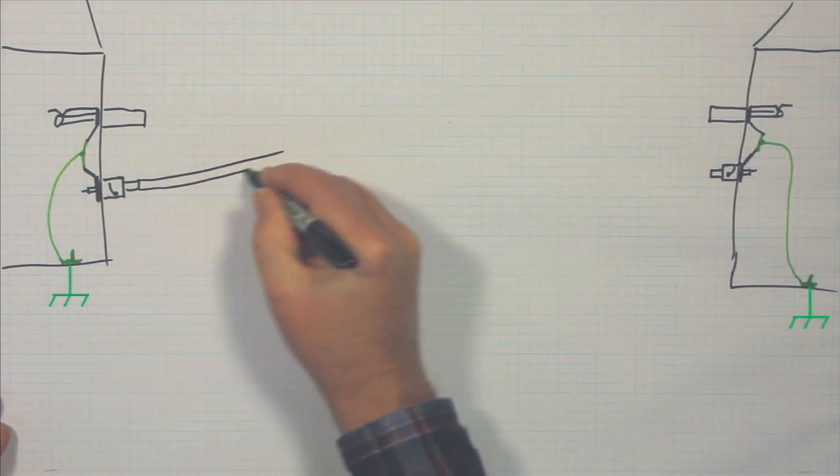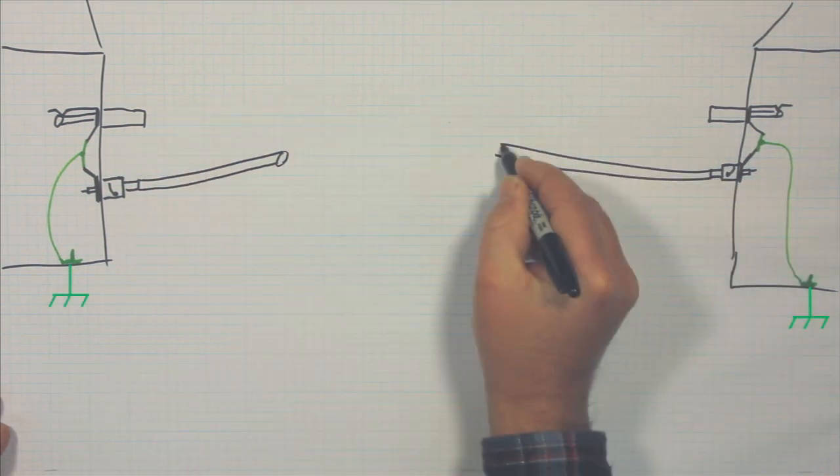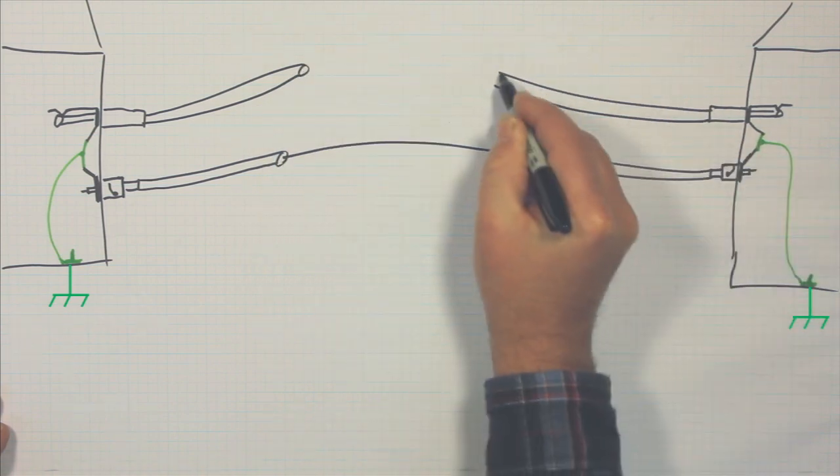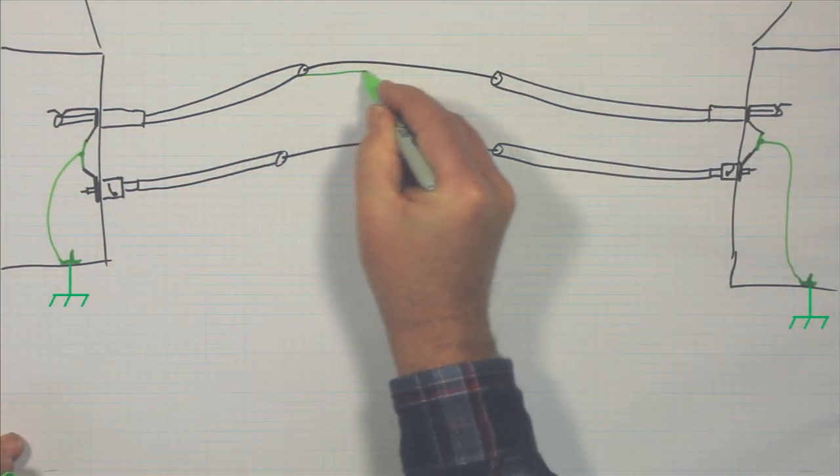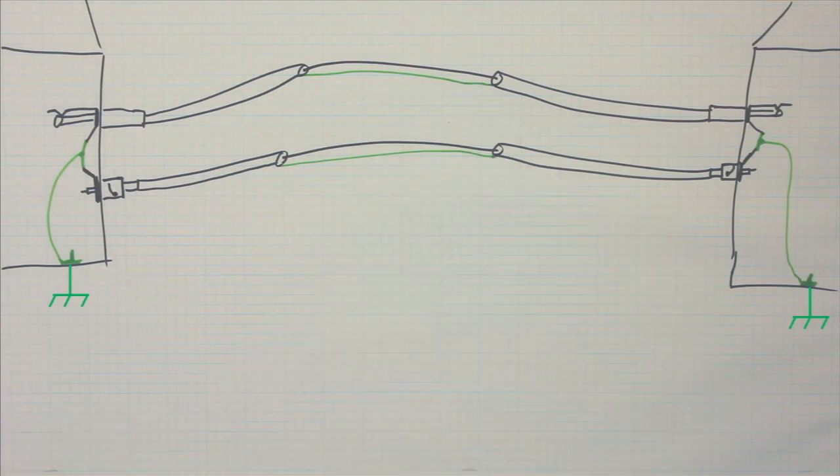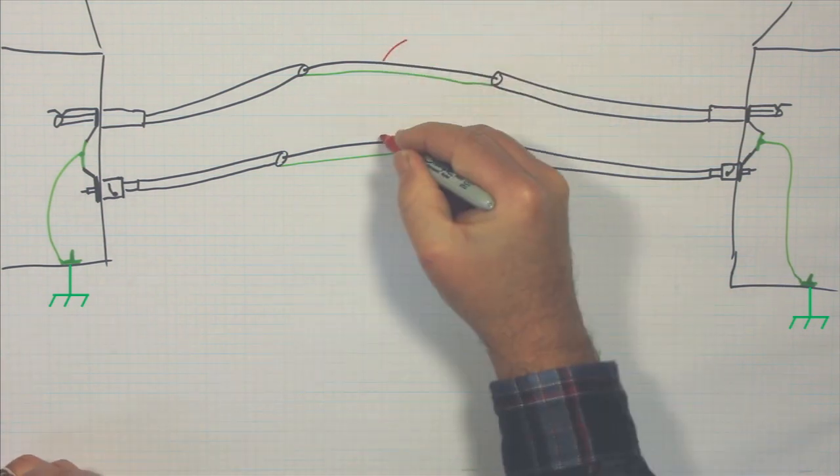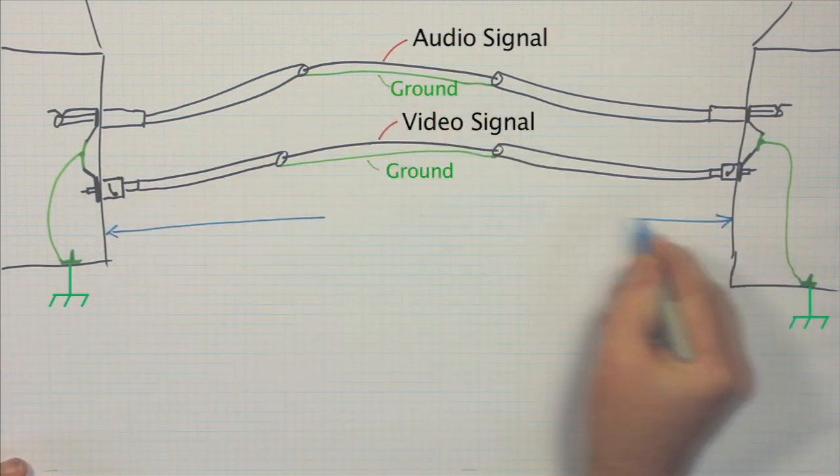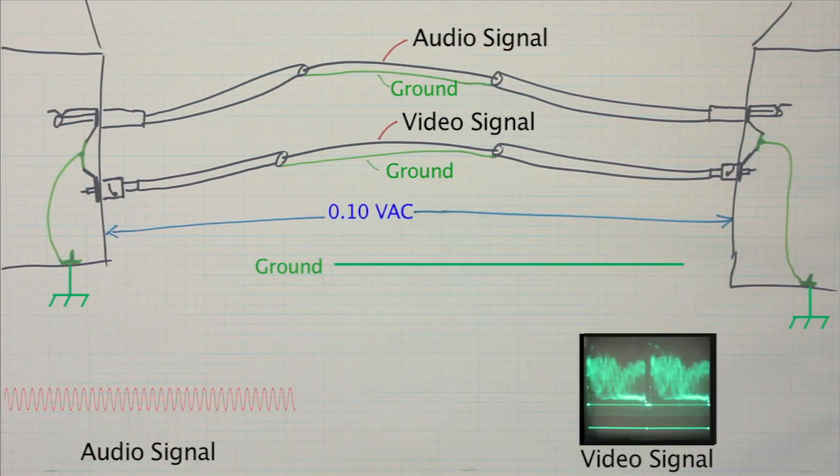The 60 cycle electrical power we use induces a slightly higher potential at one ground. And when it's connected to a lower potential ground through the shield or ground of an audio or video cable, a 60 cycle voltage is induced and current flows through that audio or video shield. This current flow causes the reference conductor, the signal ground, to fluctuate in potential or voltage.